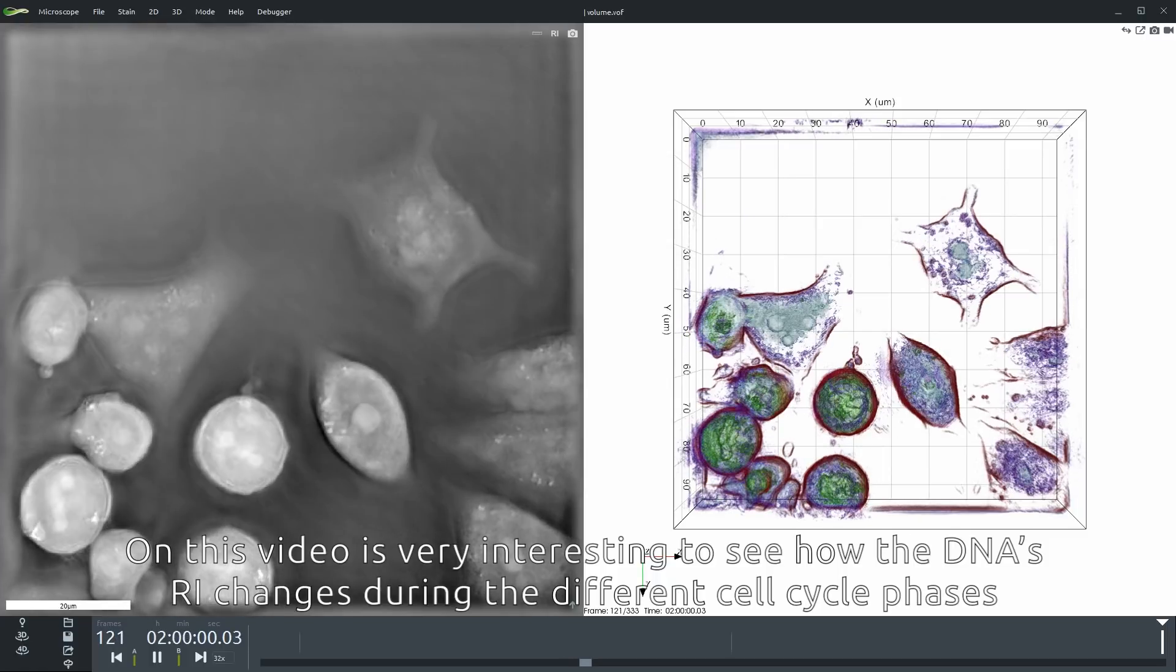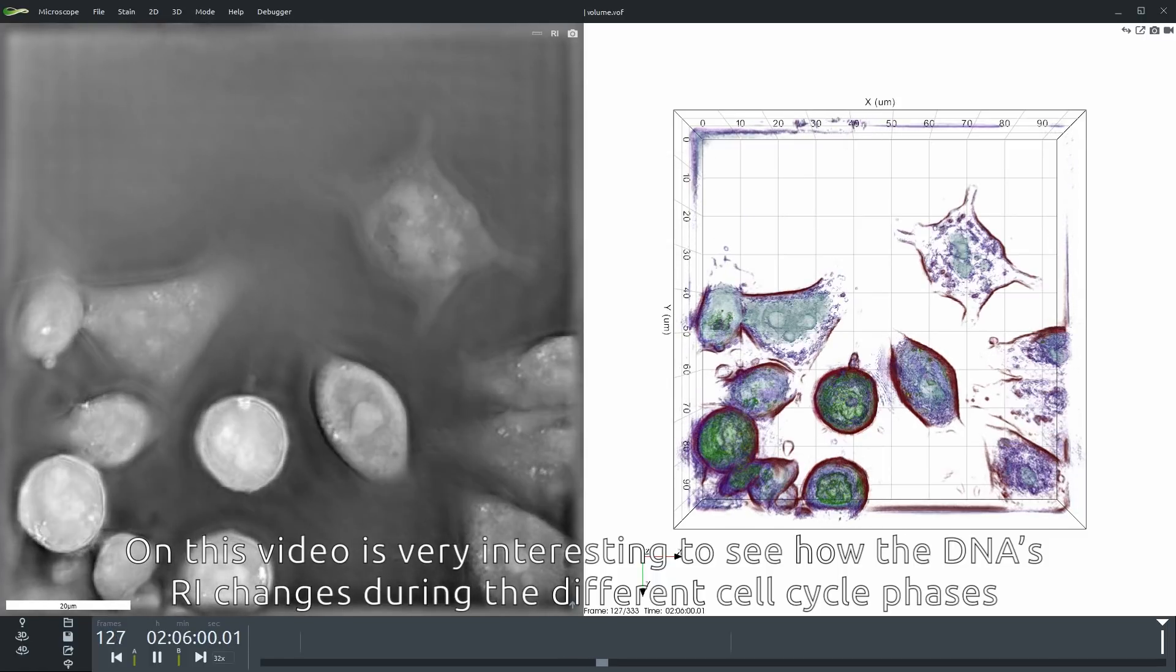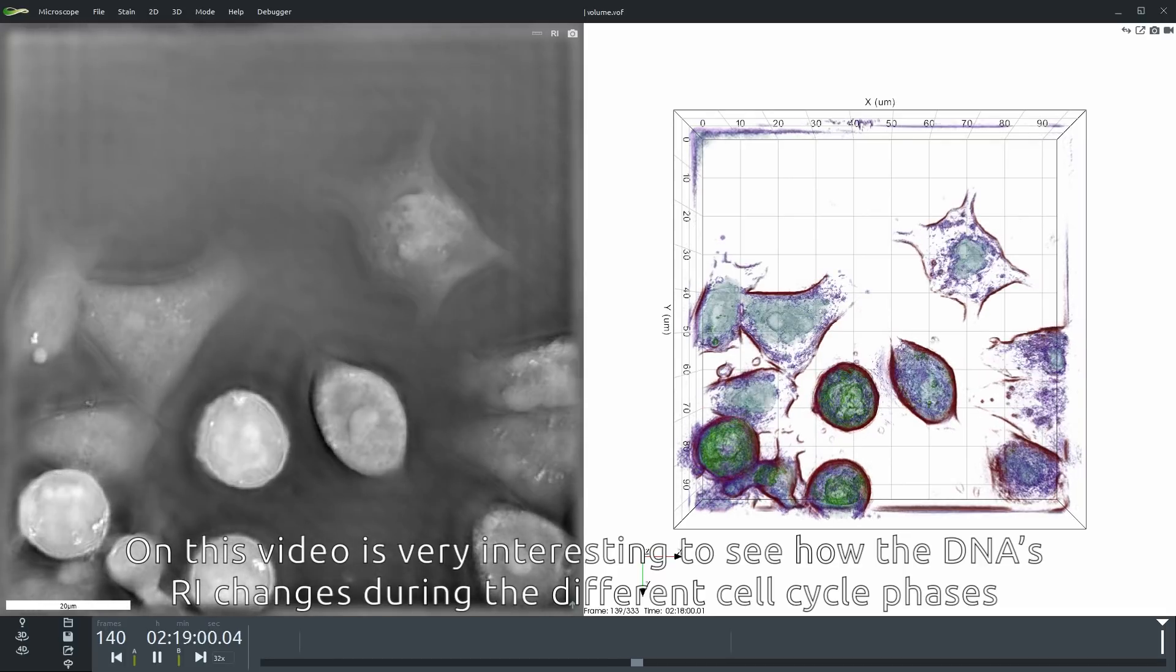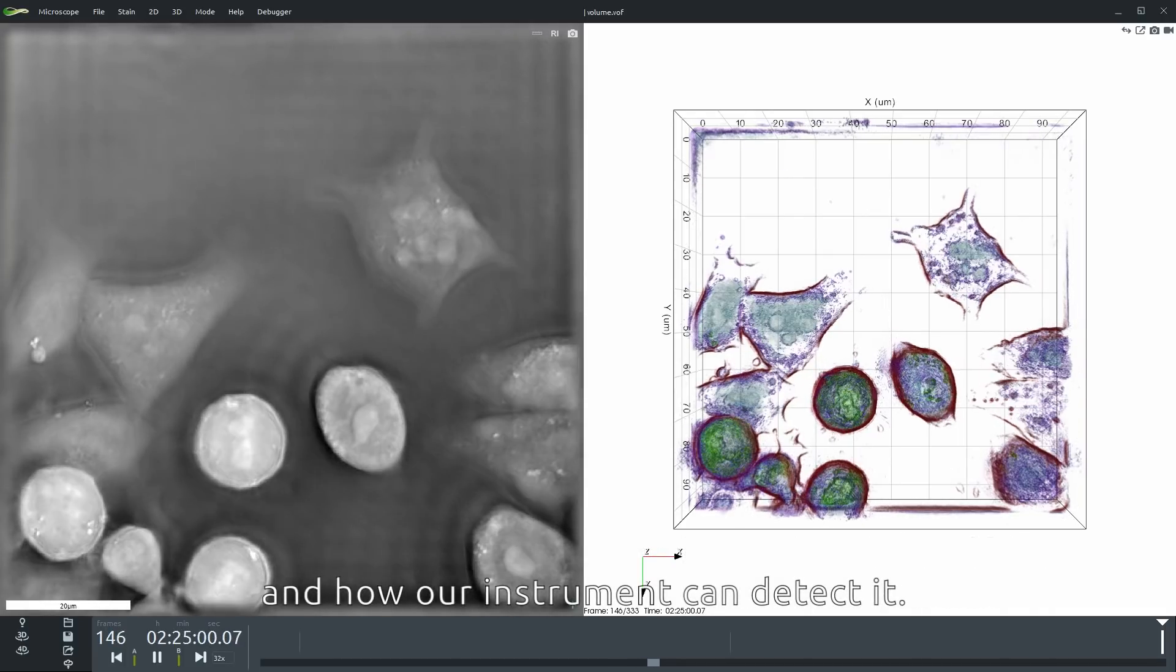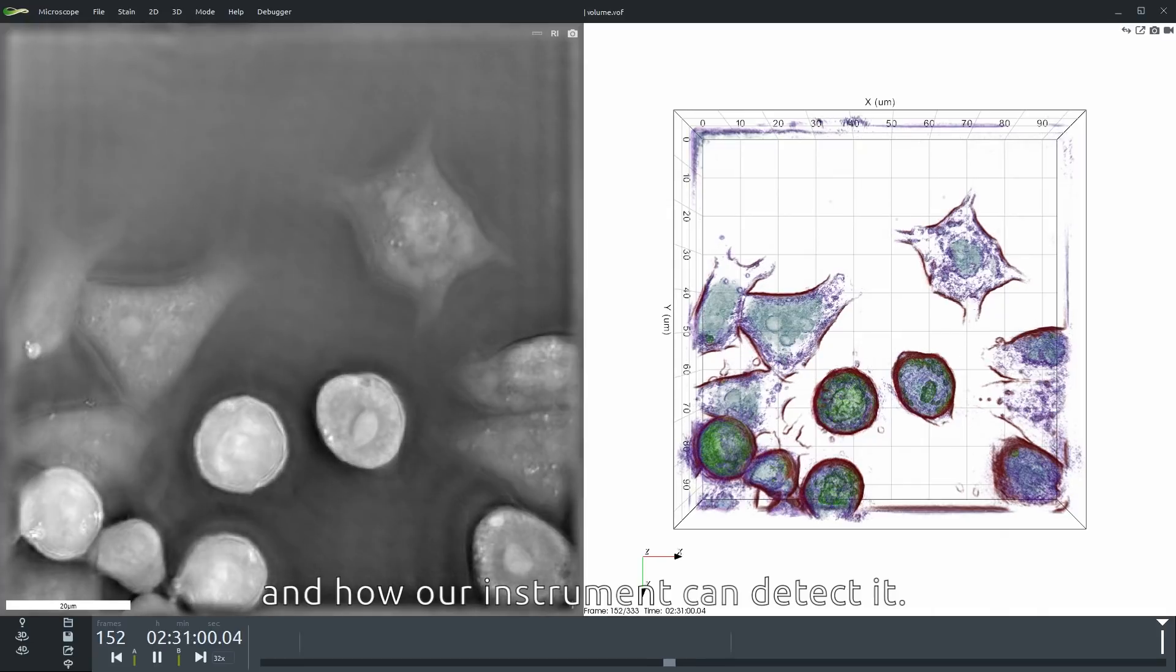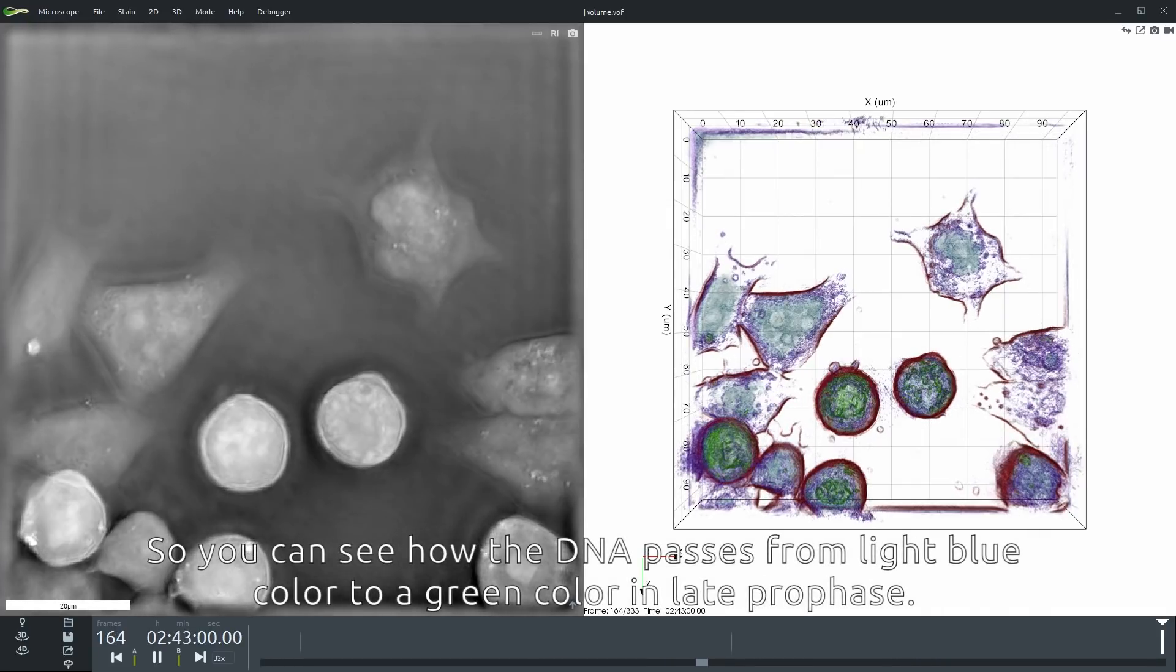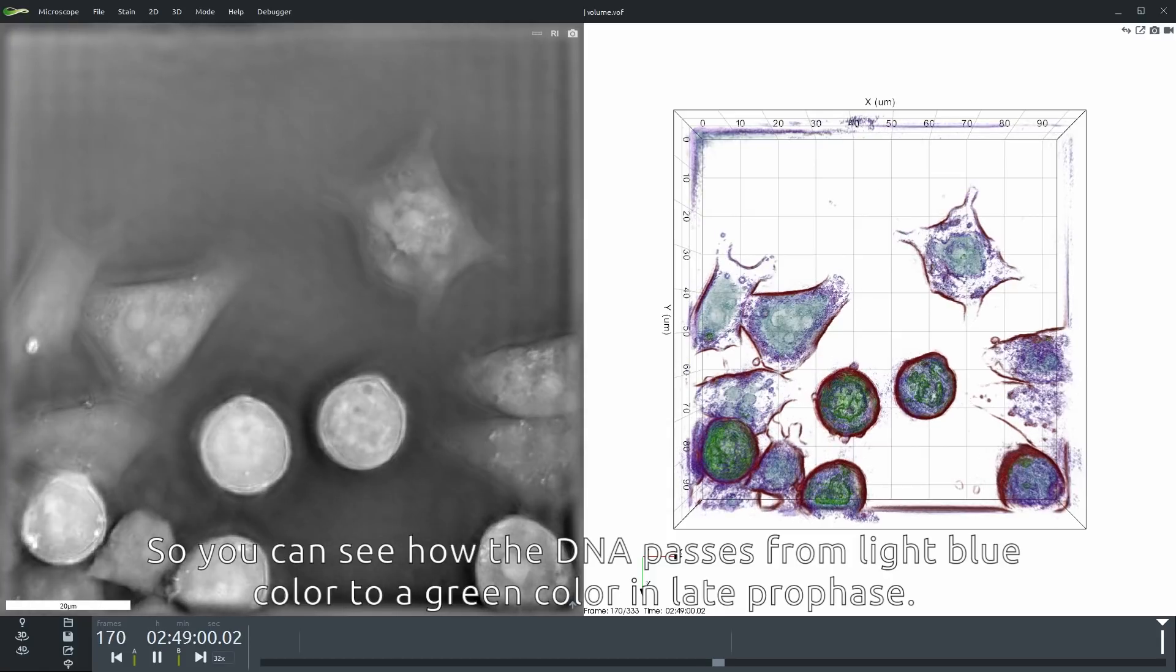On this video it is very interesting to see how the DNA refractive index changes during the different cell cycle phases and how our instrument can detect it. You can see how the DNA passes from a light blue color to a green color in late prophase.